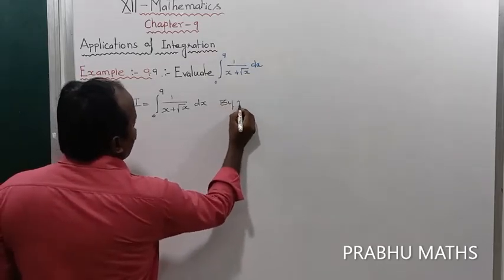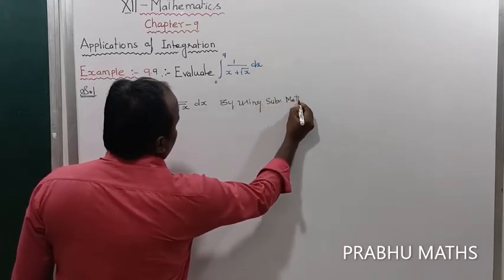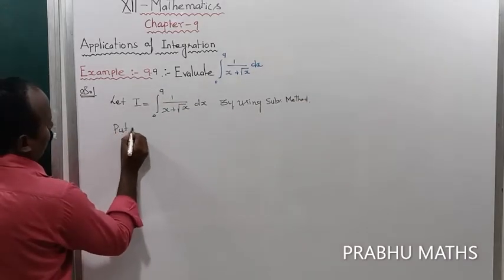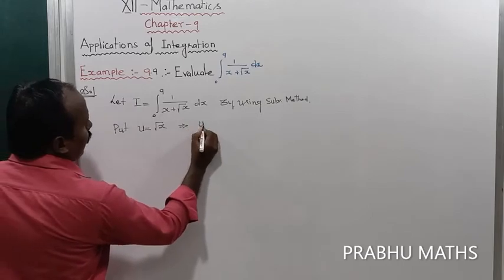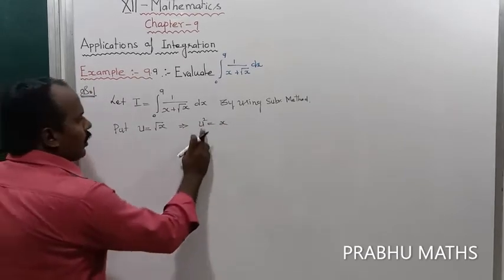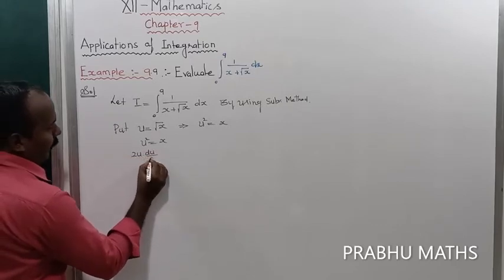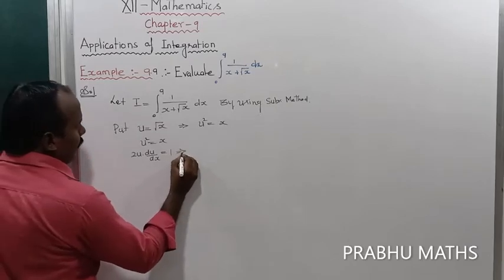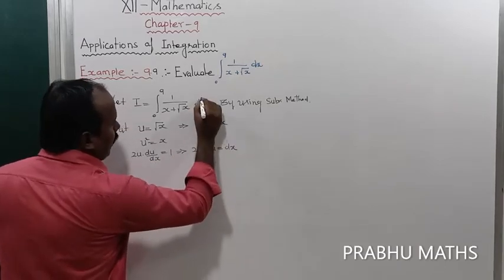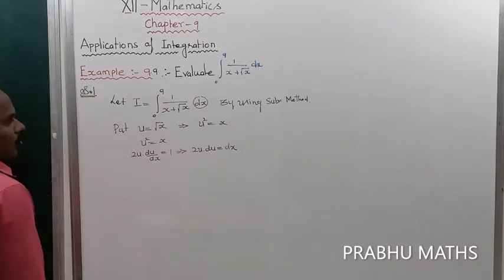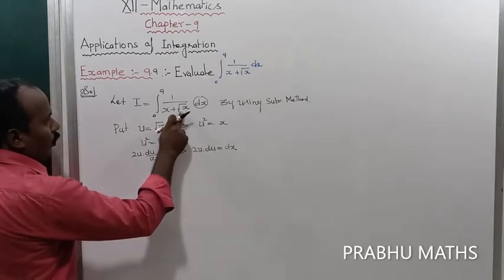For this integration, we use the substitution method. Put u equal to root x. Squaring both sides gives u squared equal to x. Differentiating, 2u du divided by dx equals 1, which implies dx is equal to 2u du. So x is replaced by u squared, and root x is replaced by u.